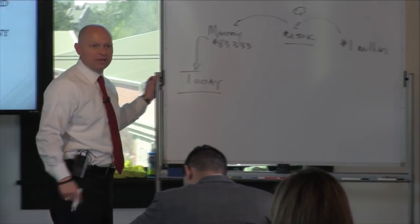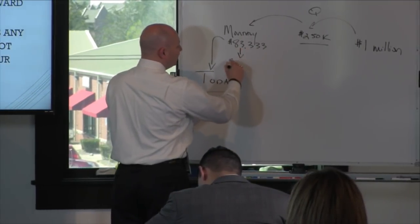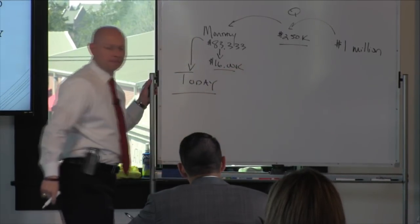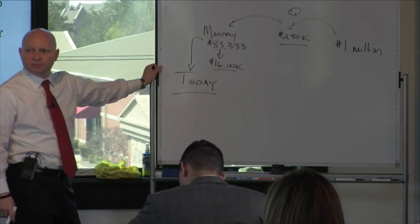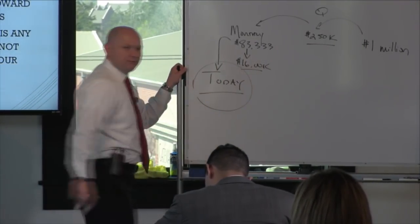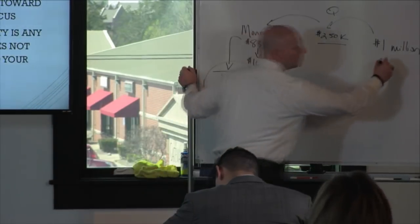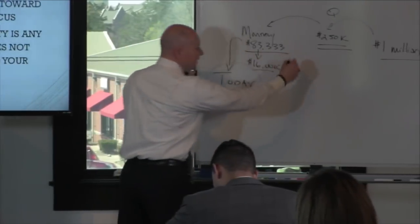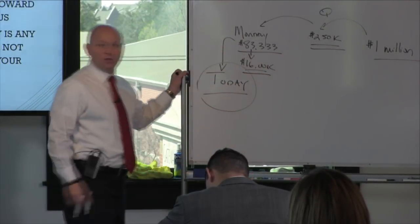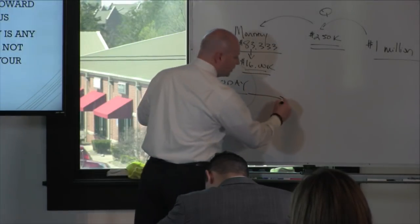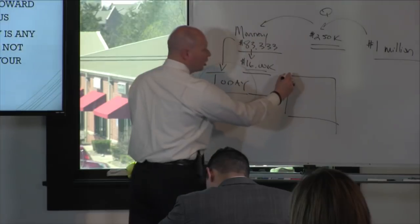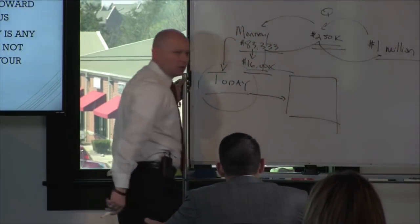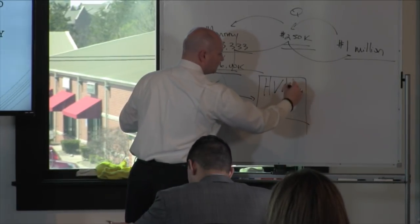This is where people fall off the wagon. He needs to sell roughly $16,000 per week. When we get down to today, this is where the confusion comes in. He can't sell a million dollars today. He probably can't sell $250,000 today. He may not be able to sell $83,000 today or $16,000 in a day — although he could. But he can do something today that moves him closer to his weekly number, closer to his monthly, closer to his quarterly, closer to that. What he does today we call high-value activity — HVAs.